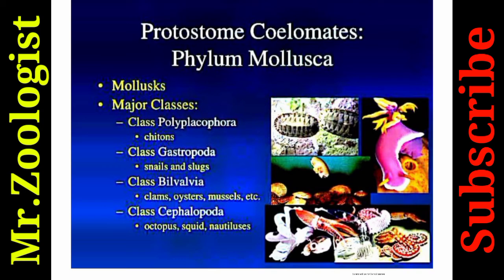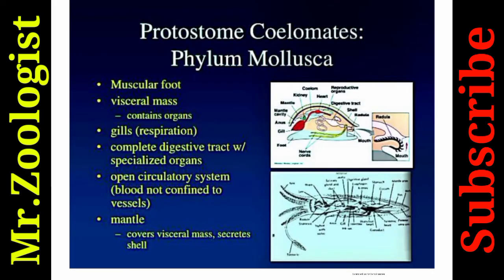Phylum Mollusca: major classes include Polyplacophora (chitons), Gastropoda (snails and slugs), Bivalvia (clams, oysters, mussels), and Cephalopoda (octopus, squid, and nautiluses). Mollusks have a muscular foot, a visceral mass containing organs, gills for respiration, a complete digestive tract with specialized organs, an open circulatory system, and a mantle cavity that covers the visceral mass and secretes a shell.